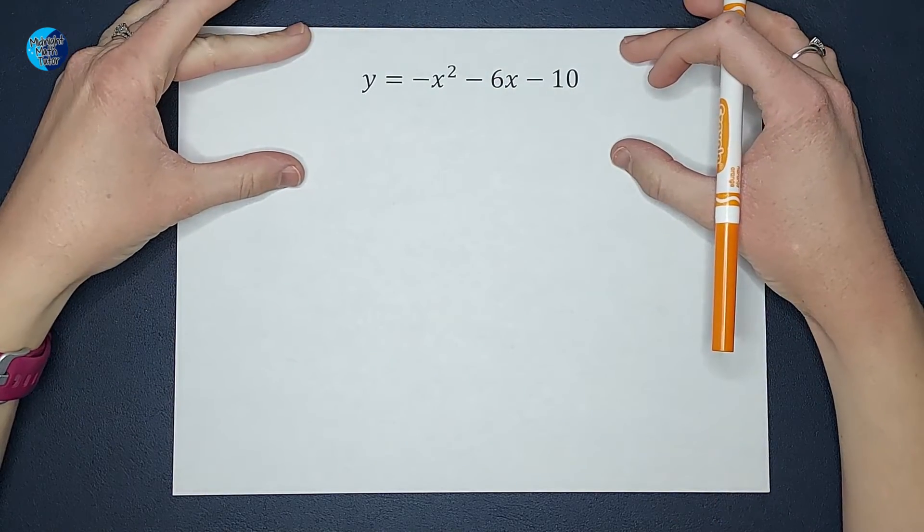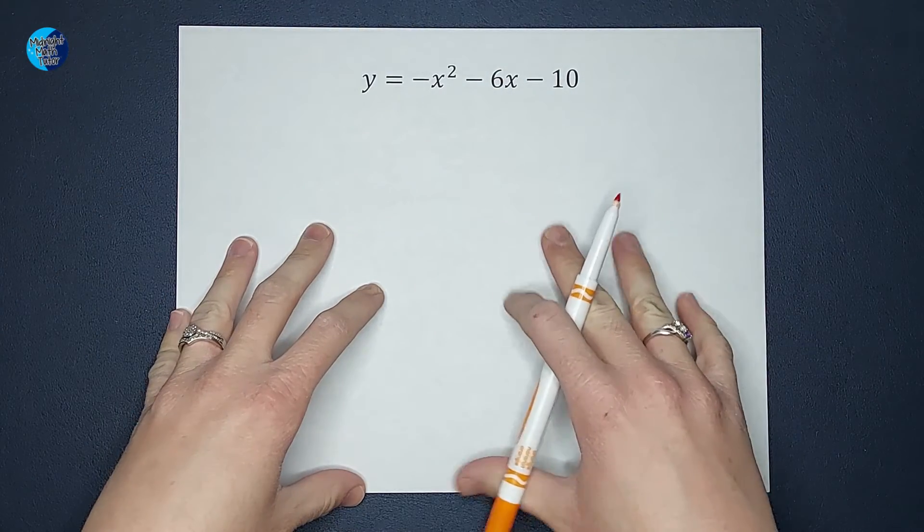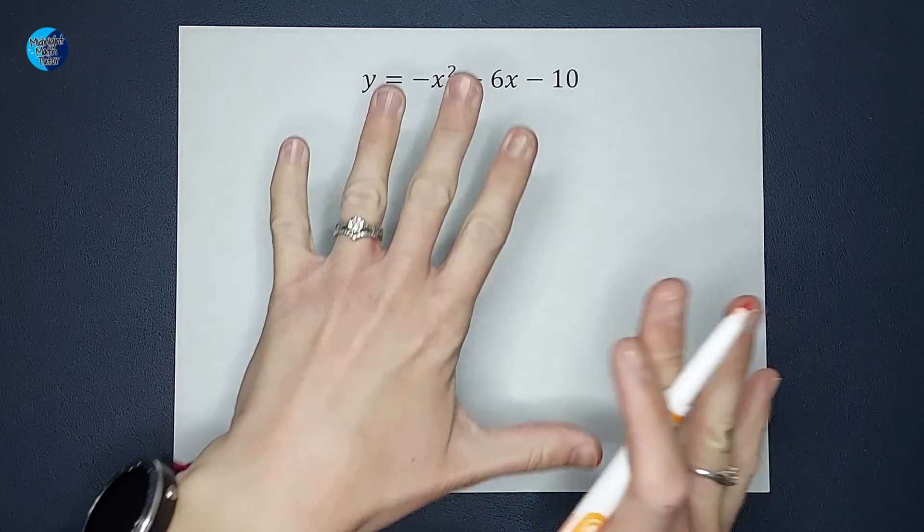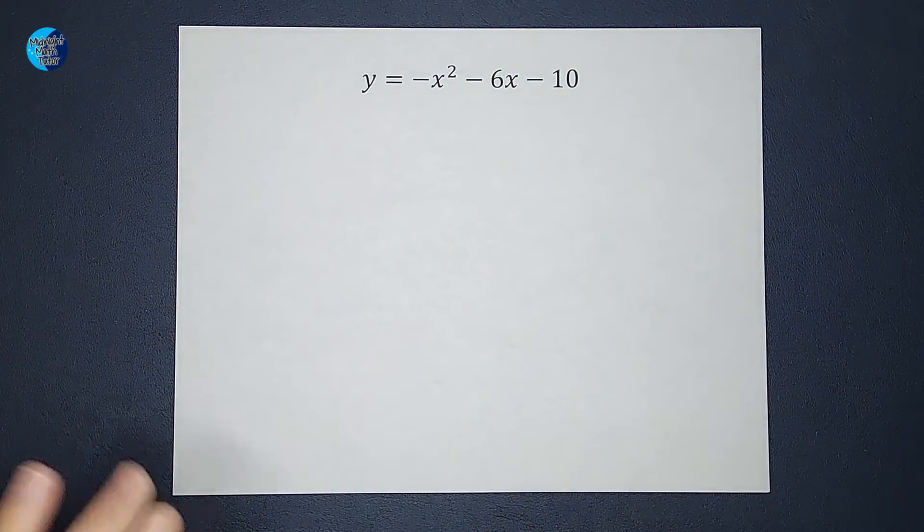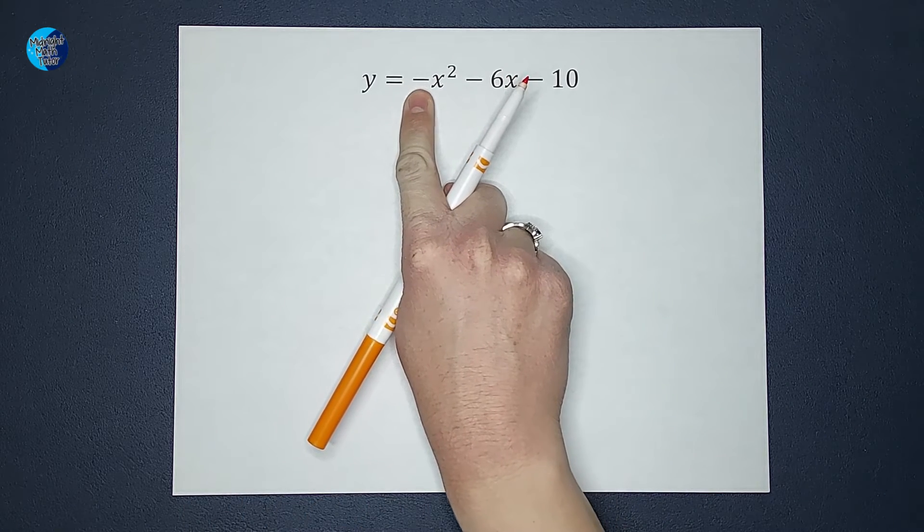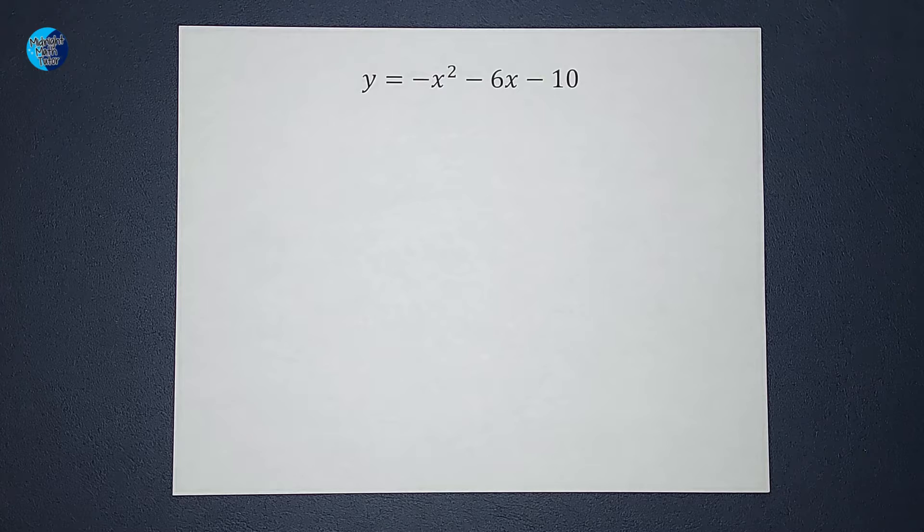Hey guys, we have an equation here in standard form and we want to change it to vertex form. Now I have another video where I already go over this in the corner if you want to check it out. This video is going to specifically talk about this conversion when we have a negative in front of the x squared.